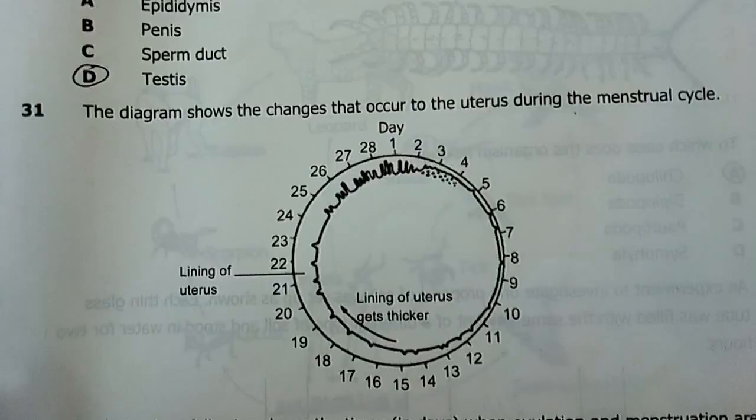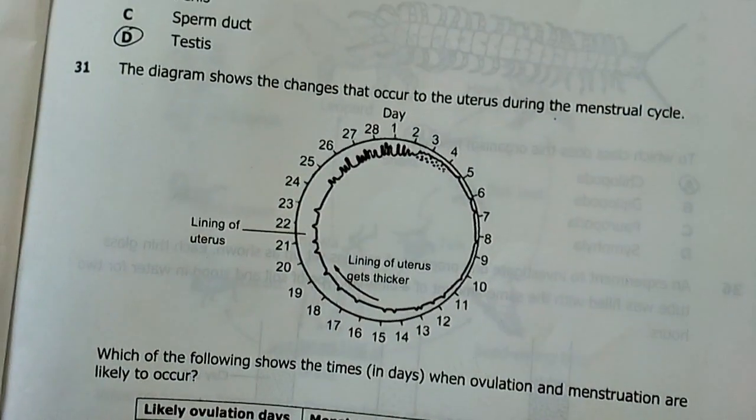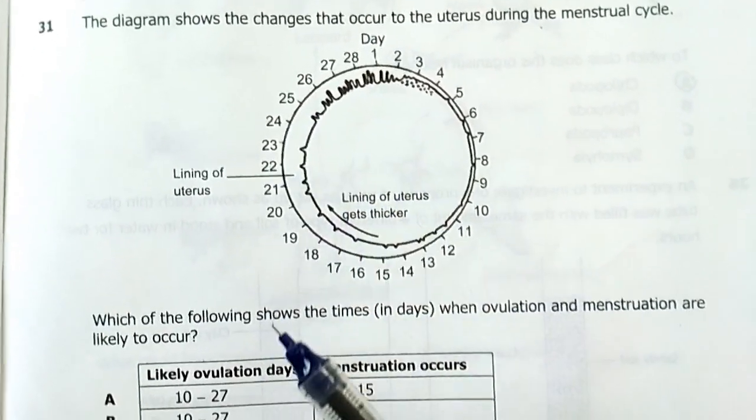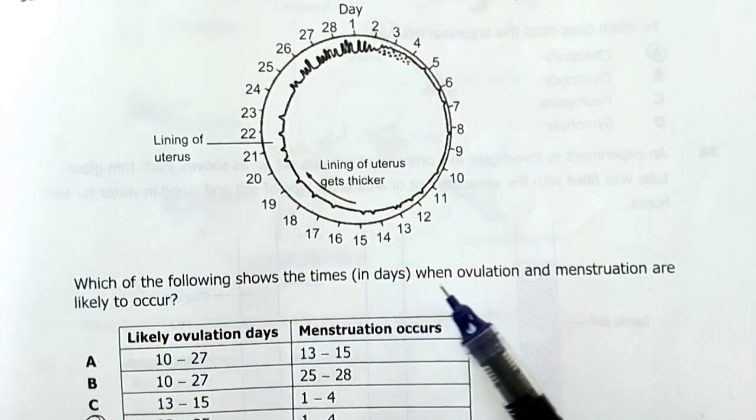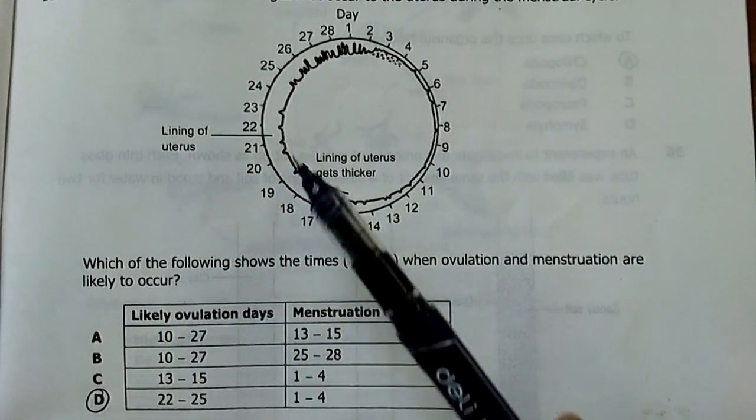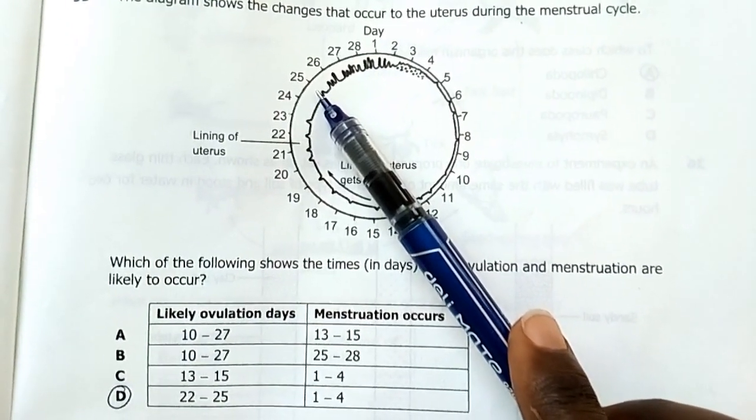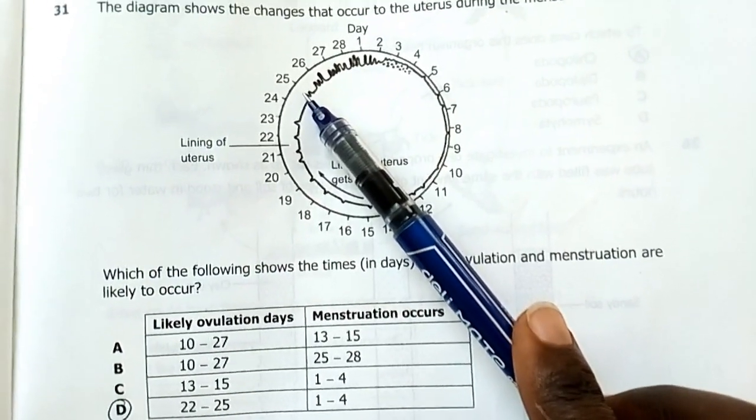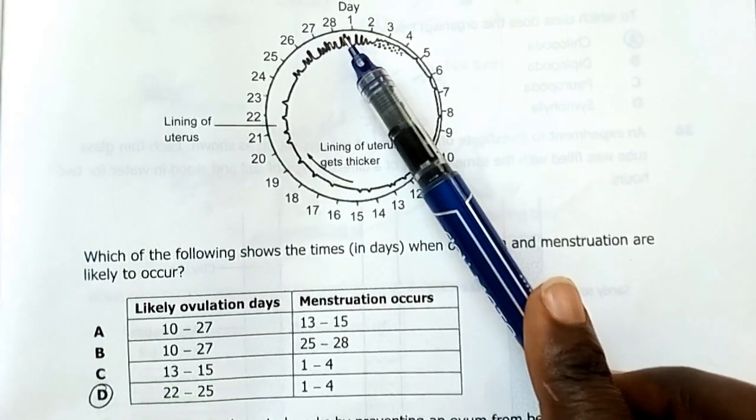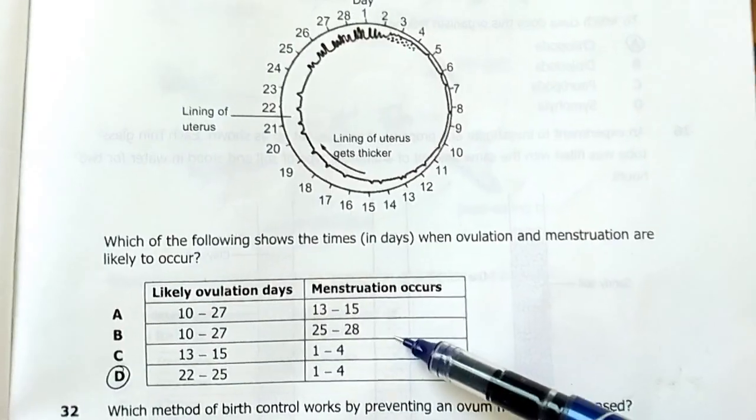Number 31, the diagram shows the exchanges that occur to the uterus during the menstrual cycle. Which of the following shows the times in days when ovulation and menstruation are likely to occur? Menstruation ends on day number four. It starts on day number one to day number four. My answer was D. Likely ovulation dates, 22 to 25. From 22 to 25, ovulation dates, then ovulation is the release of an egg, of a mature egg from an ovary into the oviduct. Then these dates, the egg is not fertilized. The egg travels and finally ends up in the uterus. And if there's no fertilization, there won't be any implantation, there won't be any hormonal control to prevent menstruation from occurring, then menstruation starts. Menstruation from day one to four. The answer there is D.